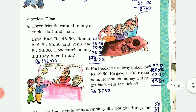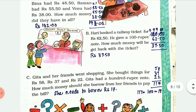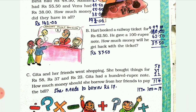Practice time: Three friends wanted to buy a cricket bat and ball. Bina had rupees 48.50, Raman had rupees 55.50. Add all the amounts and the answer is rupees 142. Hari booked a railway ticket for rupees 62.50 and gave a 100 rupee note - how much money will he get back?